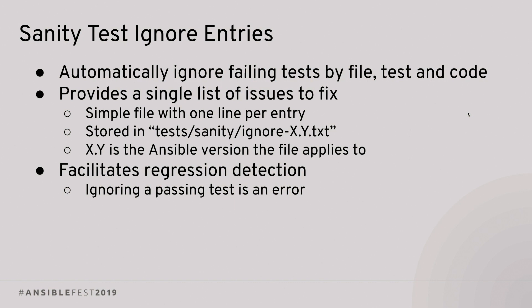Sooner or later — probably sooner — when you run your sanity tests you're going to get errors. Hopefully you can fix them, but if not, whether due to time constraints or a large collection you've brought in, ansible-test provides a way to record ignore entries — basically to acknowledge 'I know this is an issue, but don't bug me about it right now.' There's a file you put those in — a simple flat text file inside the tests/sanity subdirectory. You create an ignore-X.Y version file specific to the Ansible version you're running under. So if you're testing with Ansible 2.9, you'll have an ignore-2.9.txt, and in that file you list the files and error codes you want to suppress for hopefully dealing with later.